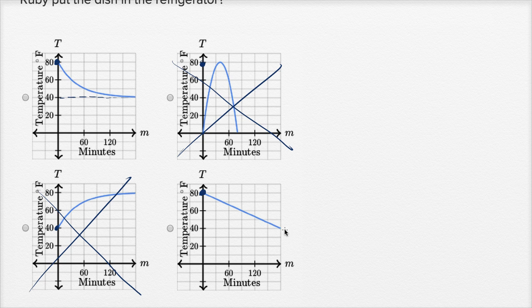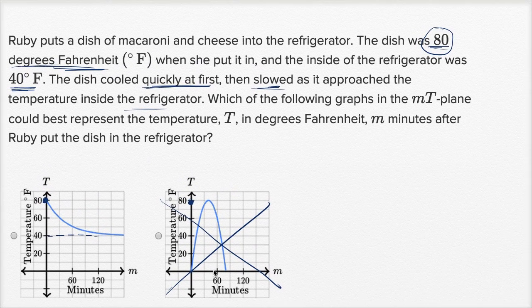This one over here, after some number of minutes, we do end up at 40 degrees Fahrenheit, but the rate of decline is constant the entire time. This is a line describing a constant rate of decline, but what they described is a changing rate of decline.